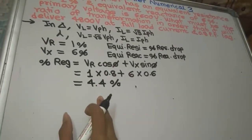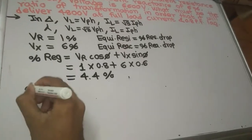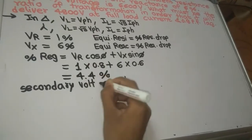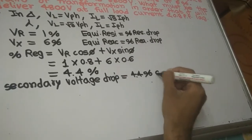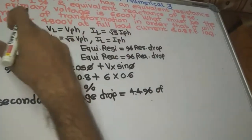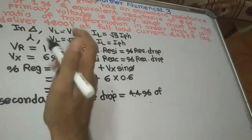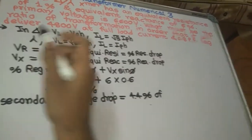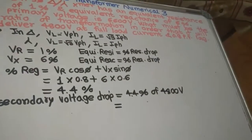We have found percentage regulation = 4.4%. From this we can find the secondary voltage drop. Secondary voltage drop = 4.4% of secondary voltage. The secondary voltage is 4800 volt — that is the line voltage being delivered on the load side in the star secondary.